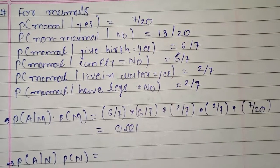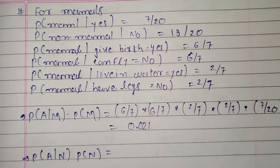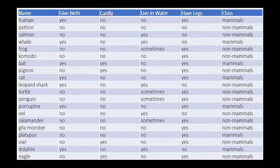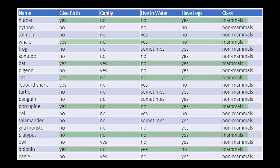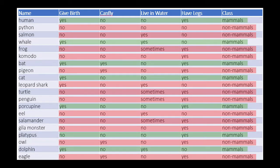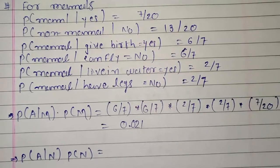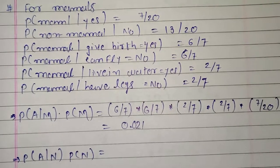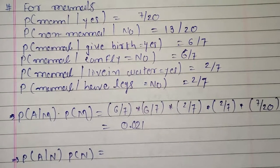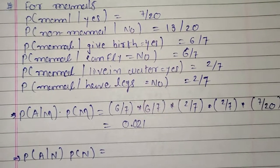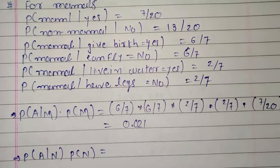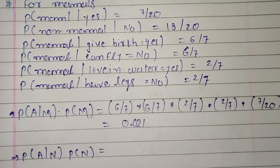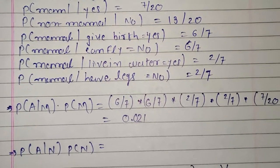So for that, first of all we are going to find for class mammals. Total records are 20. The probability of mammal yes is 7 by 20. For probability of non-mammal equal to no, it equals 13 by 20. For the attribute give birth yes and mammal, that probability is 6 by 7. For mammal and can fly equal to no, that probability is 6 by 7. For mammal and live in water equal to yes, that probability is 2 by 7. And for mammal and have legs equal to no, that probability is 2 by 7.